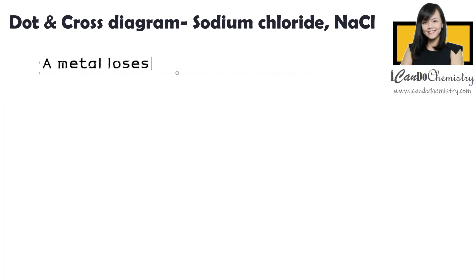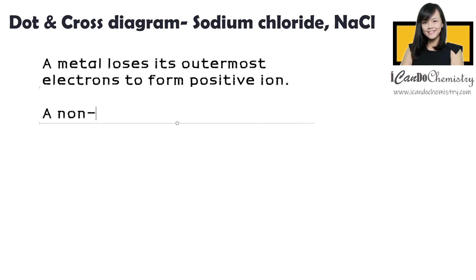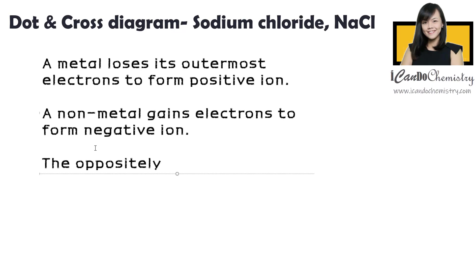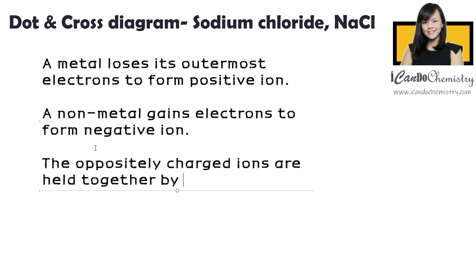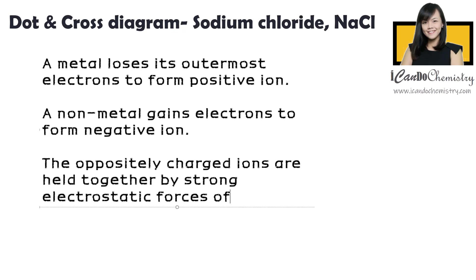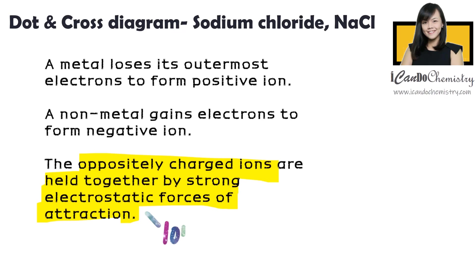In a nutshell, a metal loses its outermost electrons to form a positive ion, while a non-metal gains the electrons to form a negative ion. Take note, the oppositely charged ions are held together by strong electrostatic forces of attraction, which we call the ionic bond.